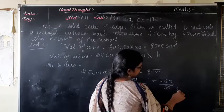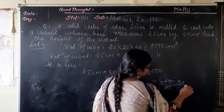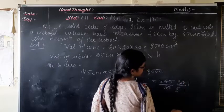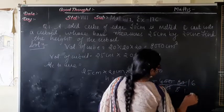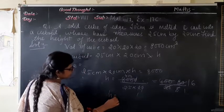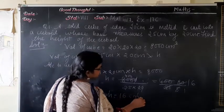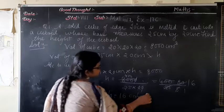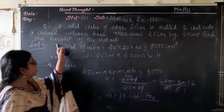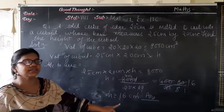Solving: 5 × 5 = 25, and 5 × 8 = 40. So the height equals 16 cm. The height of the cuboid is 16 cm. This is the answer.